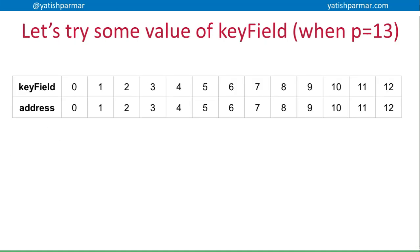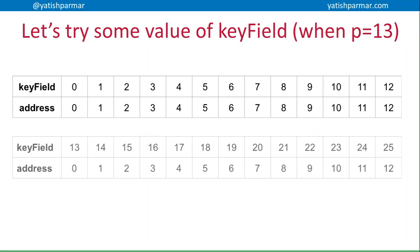So if we were going to try some values of the key fields when p was equal to 13, basically if my key field was 0, I get an address of 0. 1 gave address of 1, 4 gave address of 4, 12 gave address of 12. When key field becomes 13, my address becomes 0. When 14, I get an address of 1.